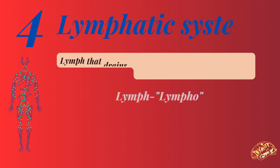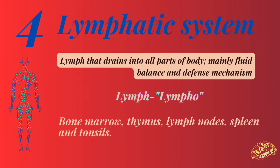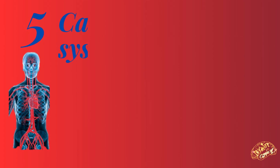Number four: the lymphatic system. It involves lymph that drains into all parts of the body, and mainly helps in fluid balance and defense mechanism. The medical term for lymph is 'lympho'. Lymph organs include bone marrow, thymus, lymph nodes, spleen, and tonsils.